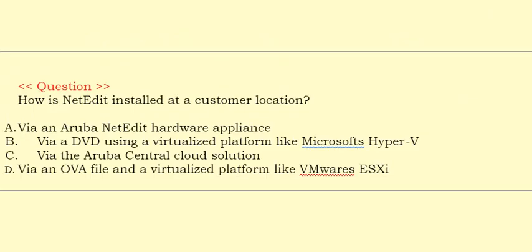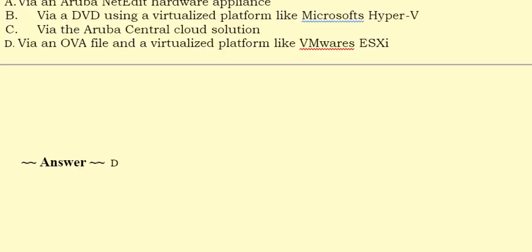Next question: How is NetEdit installed at a customer location? Option A: Via an Aruba NetEdit hardware appliance. Option B: Via a DVD using a virtualized platform like Microsoft's Hyper-V. Option C: Via the Aruba Central Cloud solution. Option D: Via an OVA file and a virtualized platform like VMware's ESXi. The correct answer is Option D.